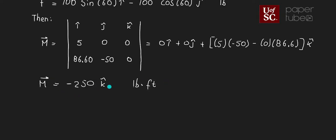Notice something important: I didn't have to apply the right-hand rule to find that negative sign — the negative 250k came straight from the calculation. As we'll see when we do the scalar version, we do have to think about the right-hand rule to determine whether the moment is positive or negative. Let's now do the scalar analysis.